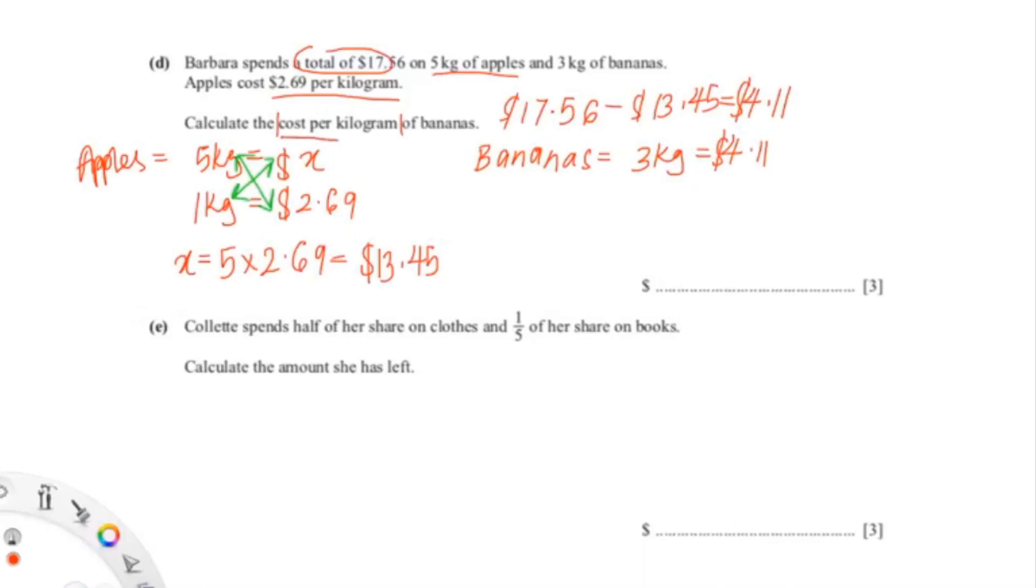And since the question is asking for the cost of banana per kilogram, we need to find the cost of banana for 1 kg. So 1 kg equals x dollars, and you do cross multiplication again to find x. So x is 4.11 over 3. Plug this into your calculator and you will get 1.37, so the cost of